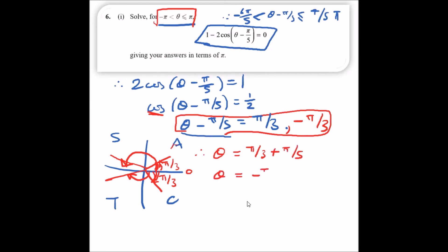That's it. What do these both give you? Well, the first one is going to give you 8π/15.